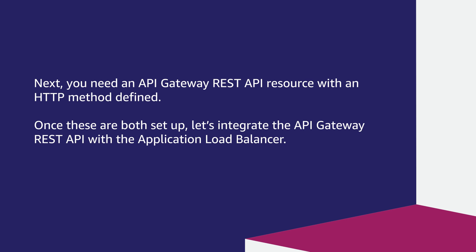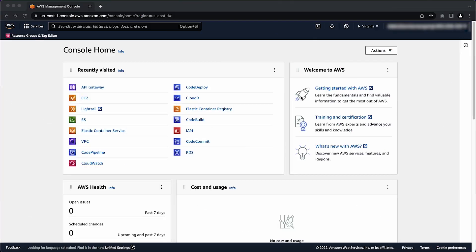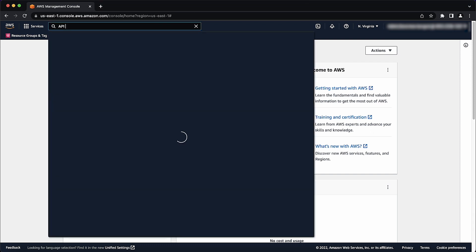Let's get both of these set up so we can integrate the API Gateway REST API with an application load balancer. After logging into the AWS Management Console, navigate to the API Gateway Console.